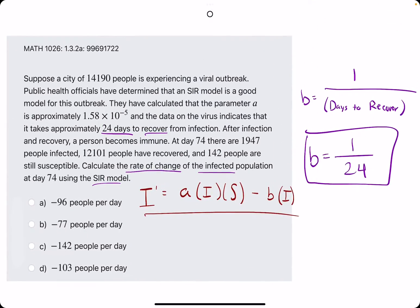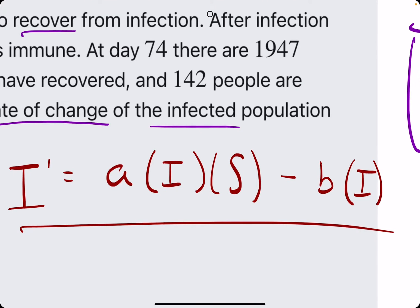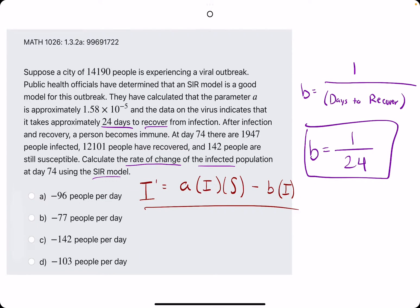Can we identify our I and S and our A value in order to calculate I prime? They say the A value is 1.58 times 10 to the negative 5. If you're unfamiliar with scientific notation, you could either just plug this into the calculator. When you're plugging in your A, just go ahead and type in 1.58 times 10 to the negative 5, put it in parentheses, and leave it like that.